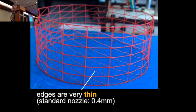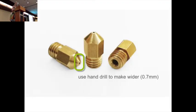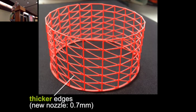Then the second thing we tweaked was the edge thickness. With the standard extrusion nozzle we get very thin edges. To have thicker extrusion, we used a hand drill to make the nozzle diameter a bit wider, which then leads to these more stable edges.